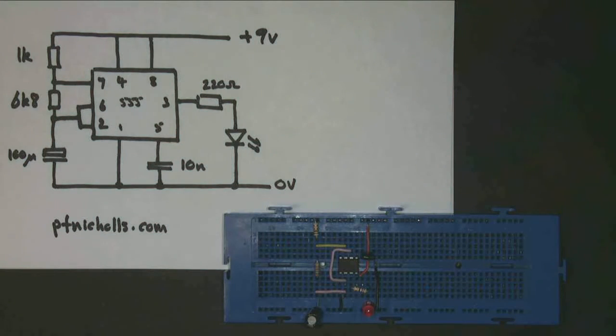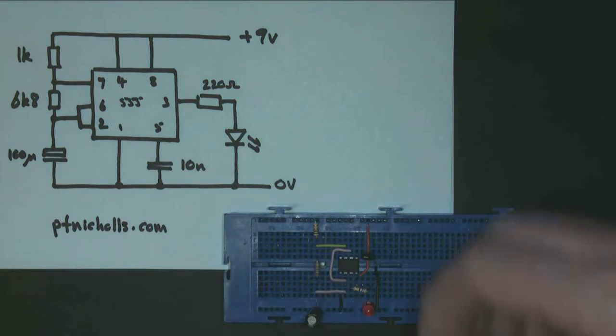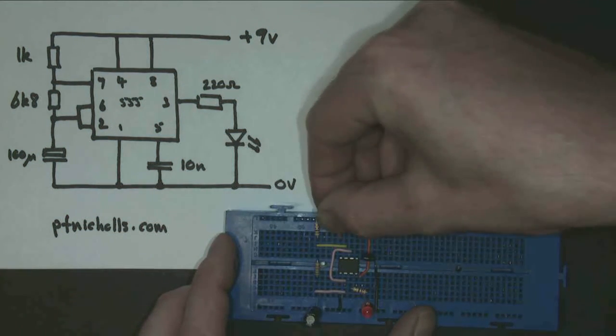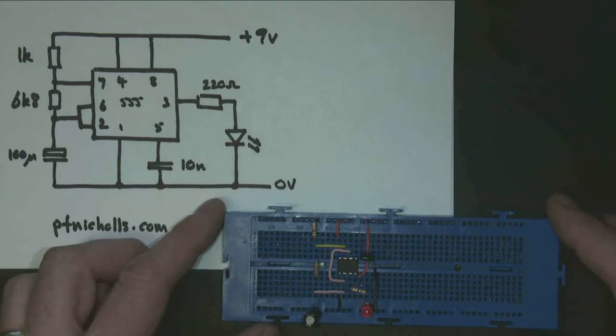And my last connection is pin 8. Pin 8 is a small red wire, because it's going to connect to positive. And again, it doesn't need to come right down to the chip. It just needs to go into that first track, just there. And there's my circuit built.